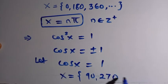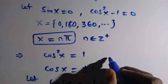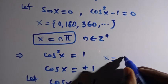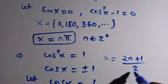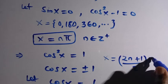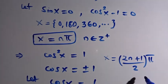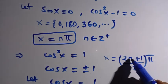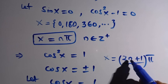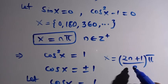We can write the general solution for cos x equals 1 in the form: x equals (2n plus 1) divided by 2, multiplied by π. This is the general term, and n is a member of the positive integers. Applying different values of n gives us the full set of solutions for this sub-case.